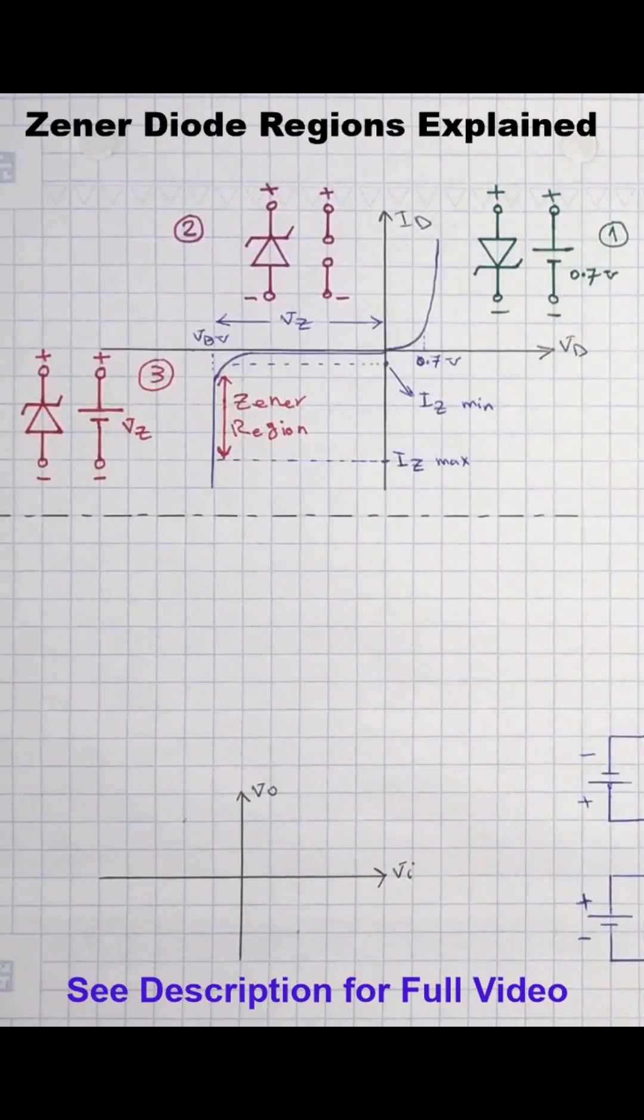The second region is when a Zener diode is reverse biased but before it gets to its breakdown point, so called breakdown or Zener voltage. In this case a positive potential is applied to the cathode terminal and a negative potential to its anode terminal.